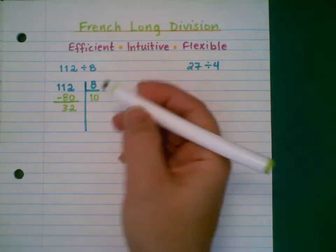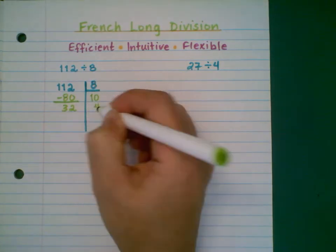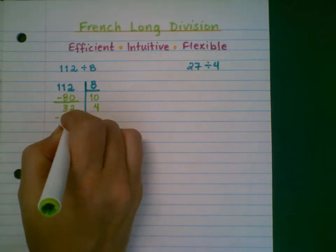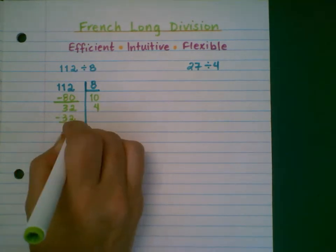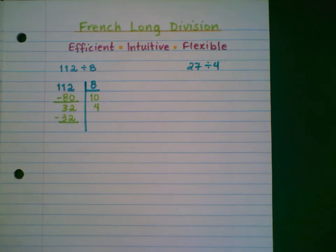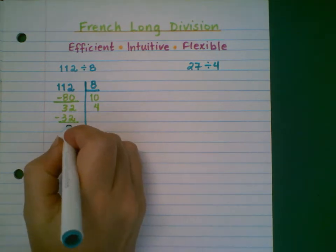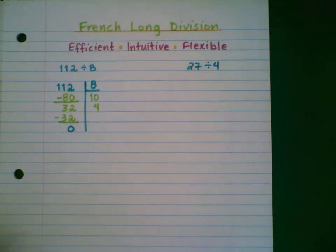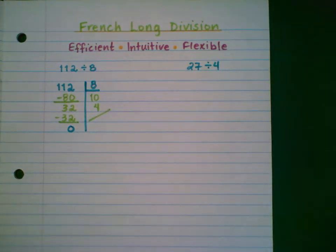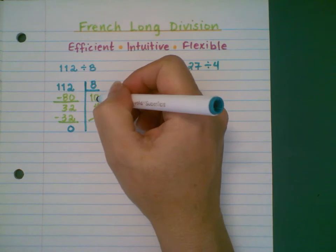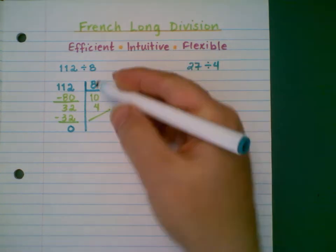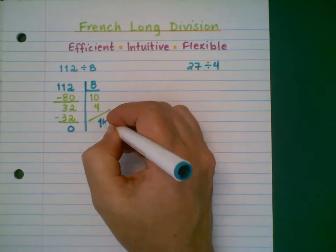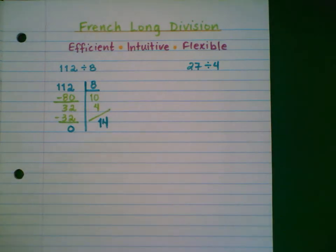32 separated into groups of 8 — that would be 4 groups of 8. I'm going to use a little bit of color here to show what's going on. The remainder at this point is 0, which tells me that 8 goes into 112 perfectly. 10 groups of 8 plus another 4 groups of 8 makes 14 groups of 8 total.